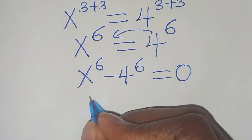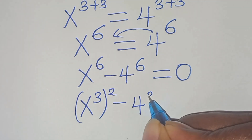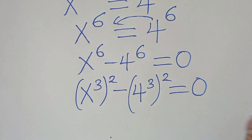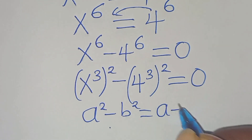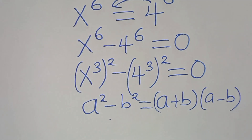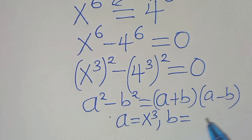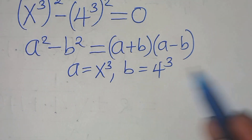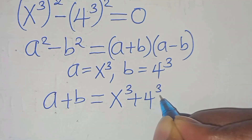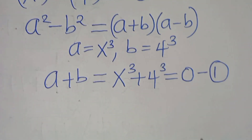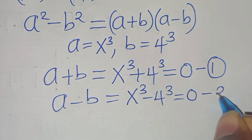We can express this as x to the power of 3 squared minus 4 to the power of 3 squared, equal to 0. This equation is in the form of a squared minus b squared, which can be expressed as (a plus b)(a minus b). From this equation, we have a equal to x to the power of 3 and b equal to 4 to the power of 3. This implies (x³ + 4³) = 0, let's call this equation 1, and (x³ - 4³) = 0, let's call this equation 2.